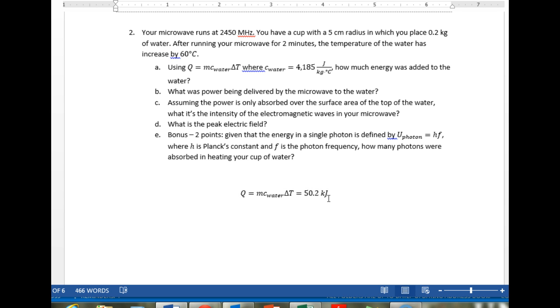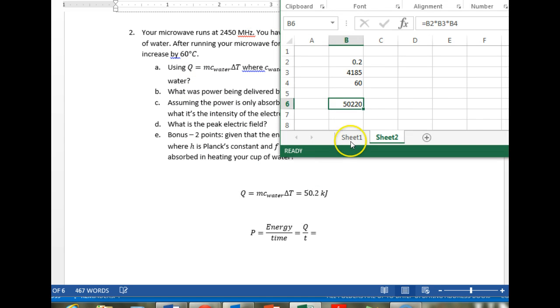Part B, what is the power being delivered by the microwave? What is power? Power is energy divided by time. So Q divided by the time that it took to deliver this. So it's the 50.2 kilojoules divided by the two minutes or 120 seconds.